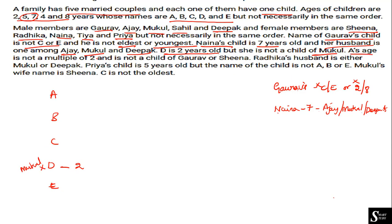Next clue: A's age is not a multiple of two. The multiples of two among the given ages are 2, 4, and 8, so A's age cannot be 2, 4, or 8 years. The only possibilities are 5 or 7 years. Additionally, A is not a child of Gaurav or Sheena, so neither Gaurav nor Sheena can be a parent to A.